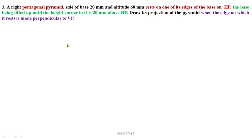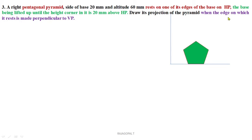The position of the pentagon: one of its edges is on HP, and this edge is also perpendicular to VP. This resting edge is perpendicular to VP. Among the five corners of this pentagon, the highest corner is the one opposite to the resting edge. This corner has to be lifted 20mm above HP.